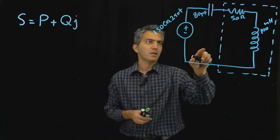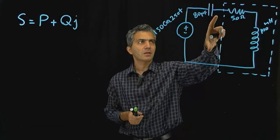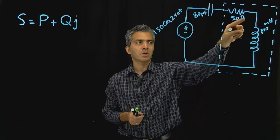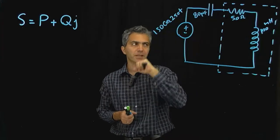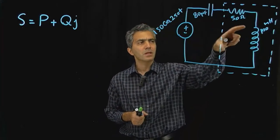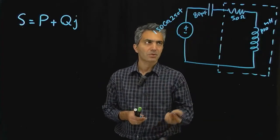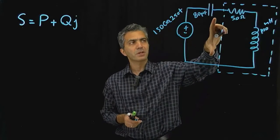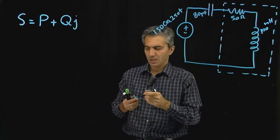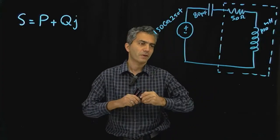Before we can calculate that, we need to take the voltage across the load and multiply it by the current passing through the load. Both of these are in phasor domain — in other words, the voltage and current are both complex numbers. So first we have to calculate the voltage and current, and to do that we will transfer our circuit into the phasor domain.